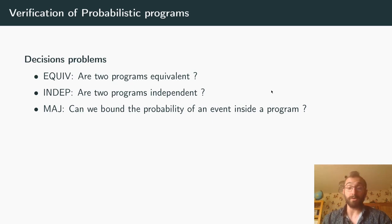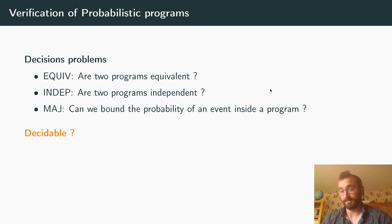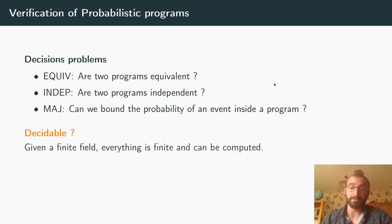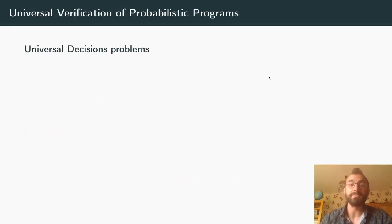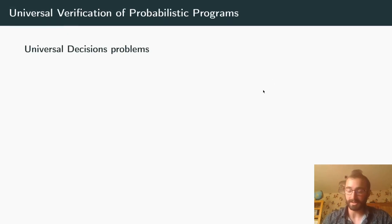First question: are those problems decidable? When we have finite fields, they are finite, so you can simply compute the distribution and everything is decidable. But an open question was the exact complexity. Still coming from the world of security, we introduced a variation of those questions which we dubbed universal.